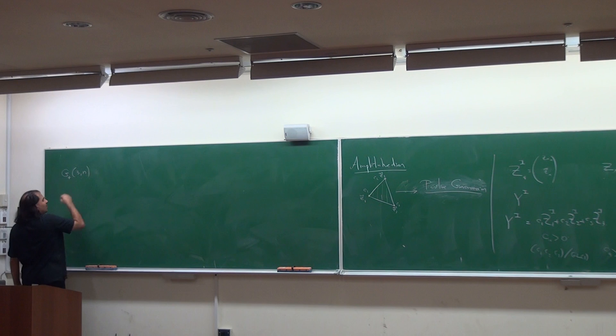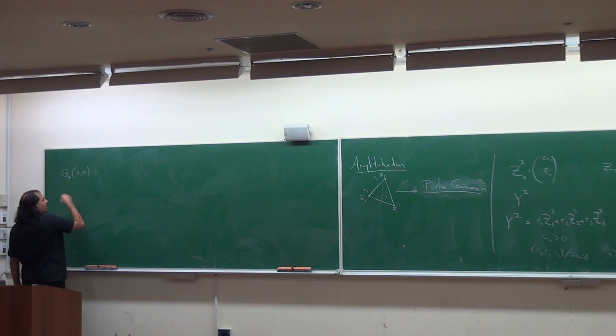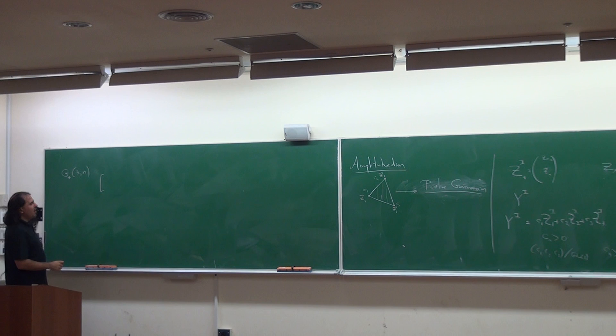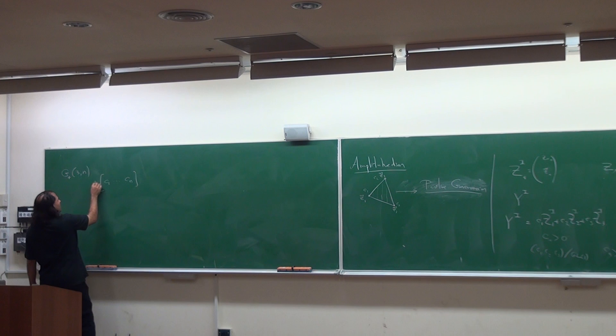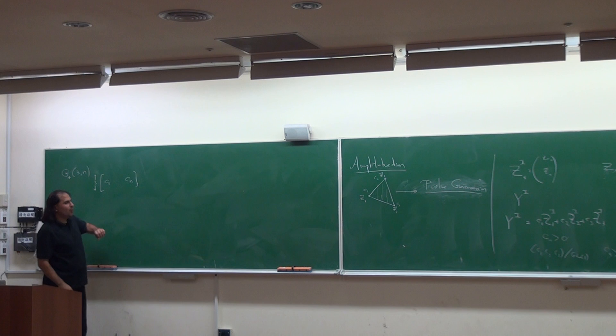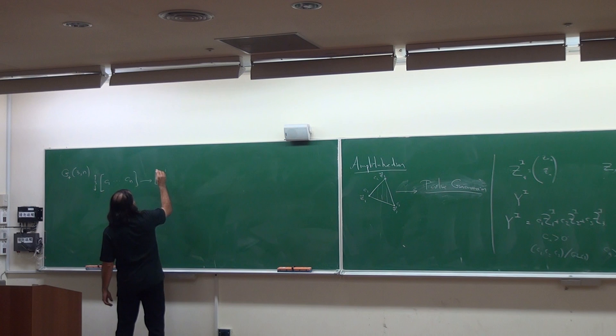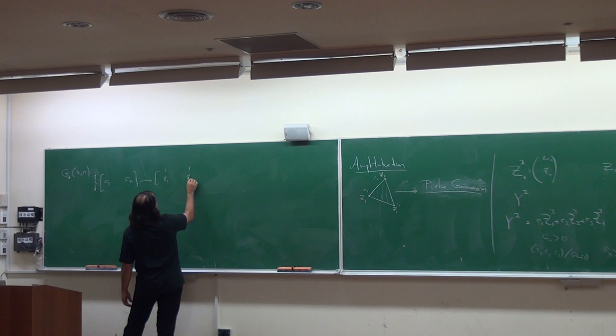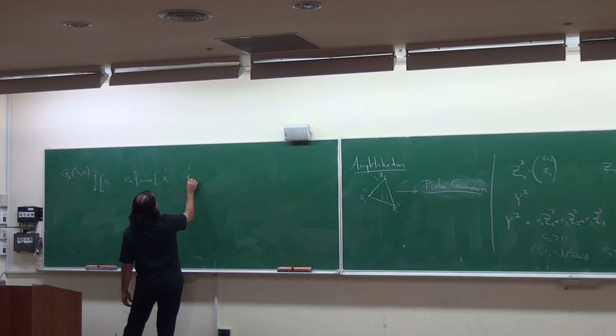The question is: what's the analog of saying all c's are positive? I can't say all matrix entries are positive because I can change that by GL(k) transformations. The only GL(k) invariants are determinants made from columns - these are minors c_{A_1} through c_{A_k}. I can say all minors are positive. I need to define an ordering for columns because determinants are anti-symmetric. The positive Grassmannian is the space of k by n matrices mod GL(k) where all ordered minors are positive.